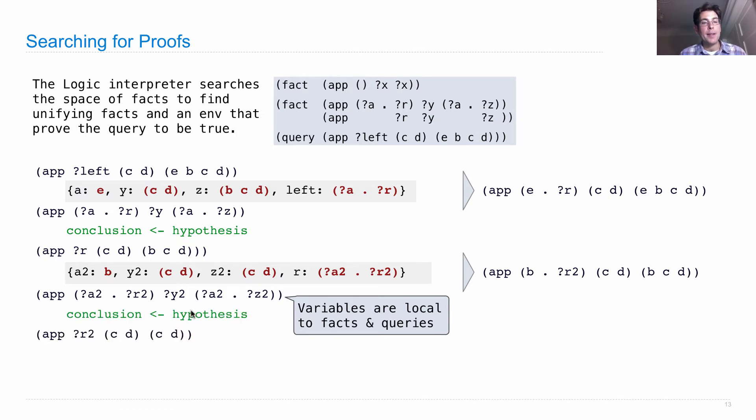The last step is to prove the hypothesis of this conclusion, where now, when we ground it out, we have something even simpler than before. It's just appending something to cd gives us cd. And this is something that we can unify successfully with the base case fact, as long as we say that x is cd, and r2 is the empty list. So now we've discovered that r2 is the empty list. We've fully unified this, and this fact has no hypothesis. It's just the conclusion. So we've done all of our work. We've actually finished the process of searching for a proof.